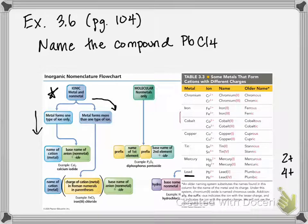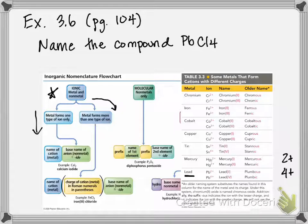We have to add a Roman numeral in parentheses right after the name of our metal to indicate what charge it is, since it could have more than one charge. The way you figure this out is we take clues from the compound and from an ion that always forms a similar charge. Chlorine, as an ion, adopts a 1− charge — it becomes Cl−.